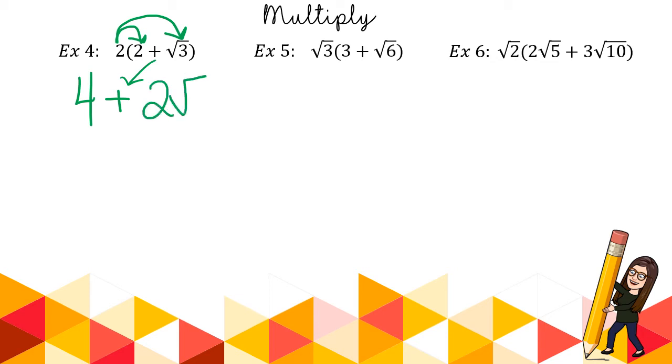Can I simplify the radical 3? Nope. And I can't add them. That's my answer. So sometimes they're that simple. So how would you show work? I would want to see at least maybe the arrows to show me that you knew to distribute correctly.